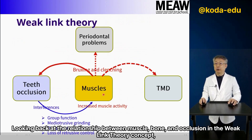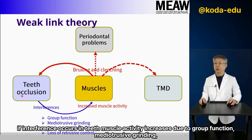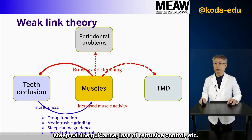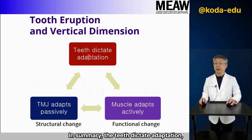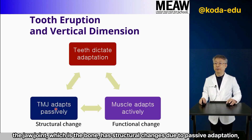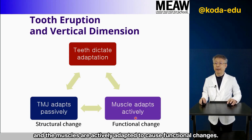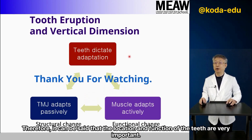Looking back at the relationship between muscle, bone, and occlusion in the weak link theory concept: if interference occurs in the teeth, muscle activity increases due to group function, mediotrusive grinding, steep canine guidance, and loss of retrusive control, which causes bruxism and clenching, affecting teeth, periodontium, or jaw joints. In summary, the teeth dictate adaptation. The jaw joint — which is the bone — has structural changes due to passive adaptation, and the muscles are actively adapted to cause functional changes. Therefore, it can be said that the location and function of the teeth are very important. Thank you for watching.